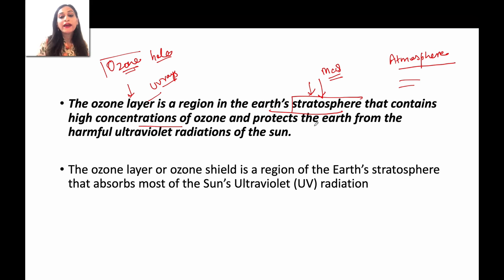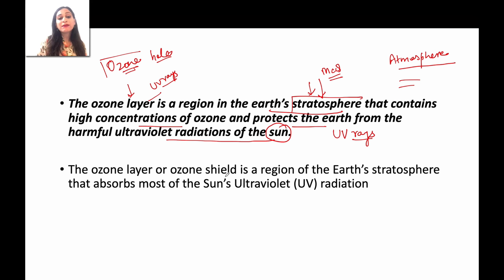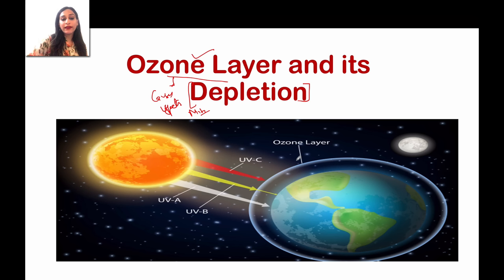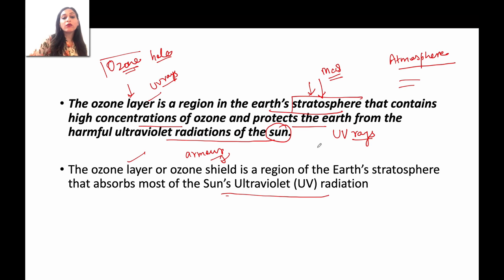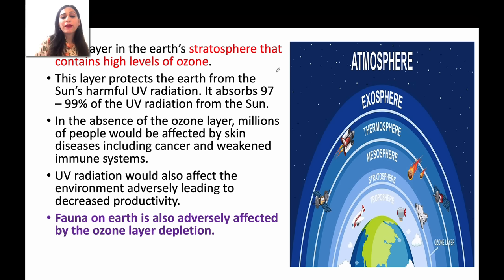Ultimately, this ozone protects us from harmful ultraviolet radiation which comes from the sun — what we call UV rays. You can understand it like armor, like a shield. The ozone layer absorbs the sun's ultraviolet radiation so that it does not reach the Earth, because UV has a harmful effect on human life, plant life, and animal life.